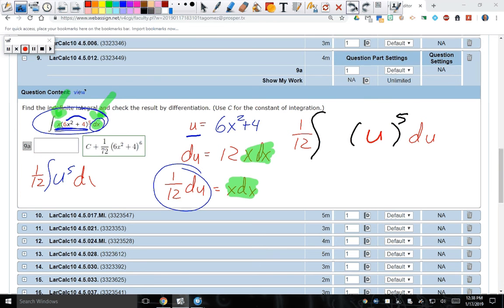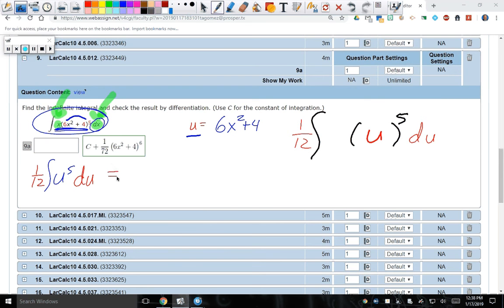Let me go ahead and rewrite it. And now we can take the anti-derivative. Alright. So let me make some room here. We're going to integrate u to the 5th, which becomes u to the 6 over 6. Multiply constant multiple rule of the 1/12 in. And what am I missing? I'm missing the plus c. So look.